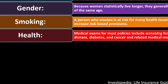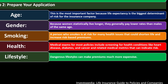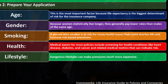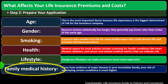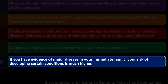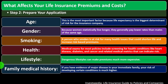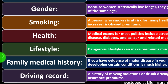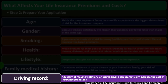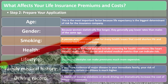Health: medical exams for most policies include screening for conditions like heart disease, diabetes, and cancer-related medical markers that can indicate risk. Lifestyle: dangerous lifestyles can make premiums much more expensive — sleeping on railroad tracks, for example, could increase risk. Family medical history: if you have evidence of major disease in your immediate family, your risk of developing certain conditions is much higher. Driving record: a history of moving violations or drunk driving can dramatically increase the cost of insurance premiums.